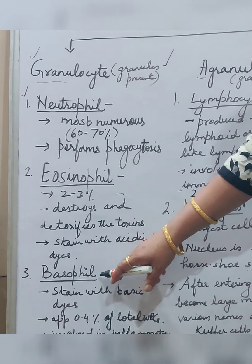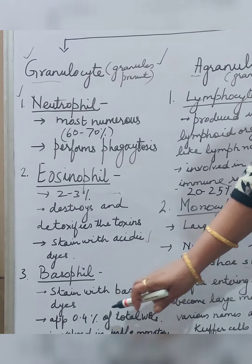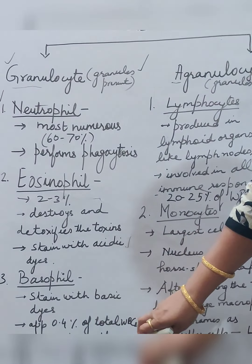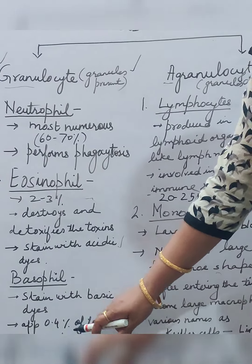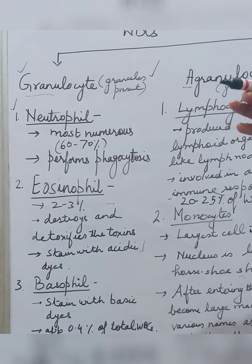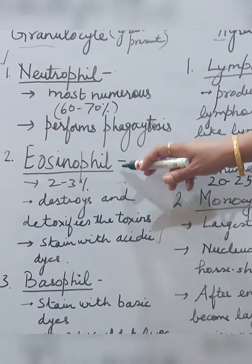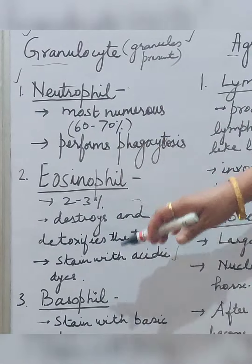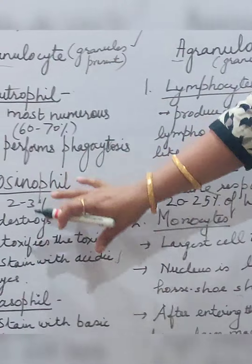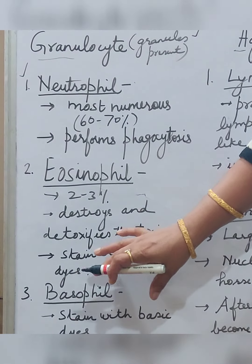Granulocytes are divided into neutrophils, eosinophils, and basophils based on their staining properties. Basophils take up basic dye when stained. All three types of granulocytes have a very short lifespan — only a few hours.